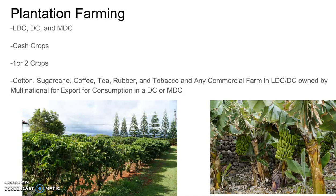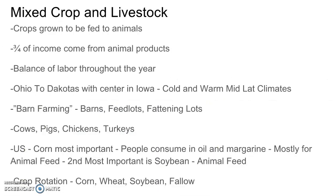Next, let's talk about mixed crop and livestock. These are crops grown to be fed to animals. Three quarters of the income comes from animal products, so they need a balance of labor throughout the year since this is relatively labor intensive. This is mainly located from Iowa to the Dakotas, with the center in Iowa — cold and warm mid-latitude climate zones. This is what we refer to as barn farming, where animals like cows, pigs, chickens, and turkeys are kept in barns and feedlots.